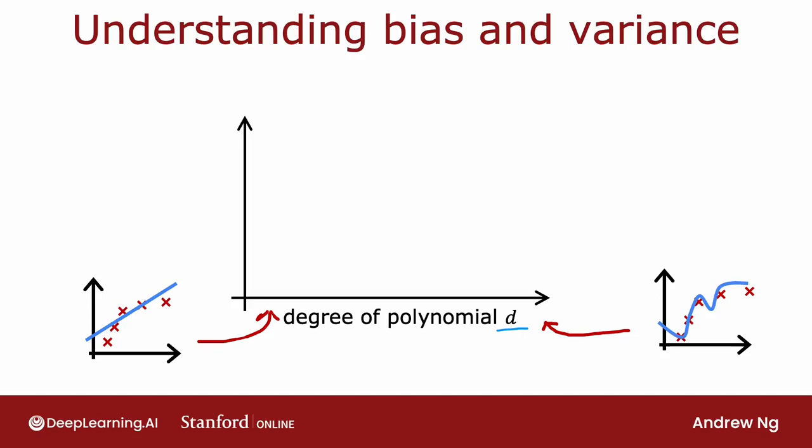If you plot J_train as a function of the degree of polynomial — assuming no regularization — as you fit a higher and higher degree polynomial, the training error will tend to go down. A simple linear function doesn't fit the training data that well. When you fit a quadratic, third-order, or fourth-order polynomial, it fits the training data better and better. So as the degree of polynomial increases, J_train will typically go down.